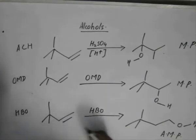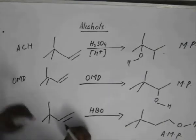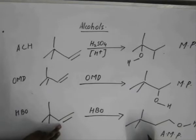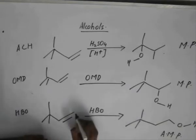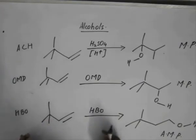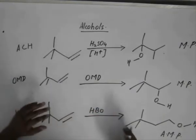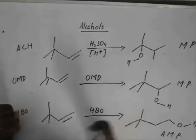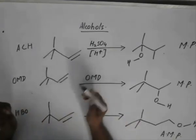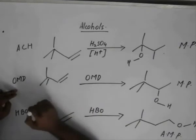In HBO, the reverse happens. So, attach the OH group which has maximum number of hydrogen atoms attached to it. So, it is a simple insight. You need not perform the whole set of mechanisms and stuff like that in case of OMD and HBO.